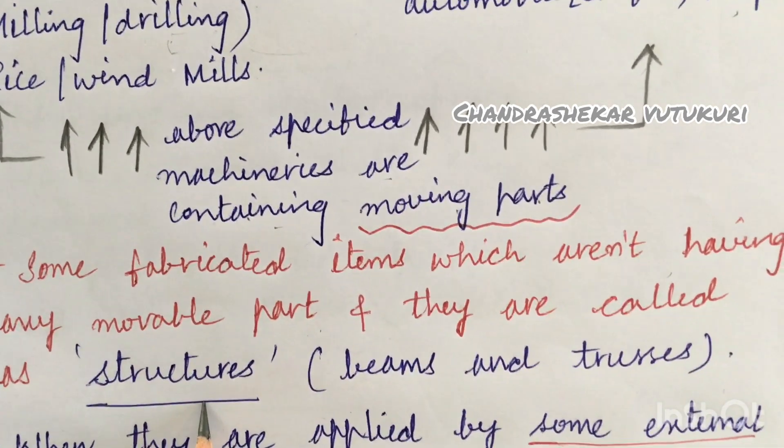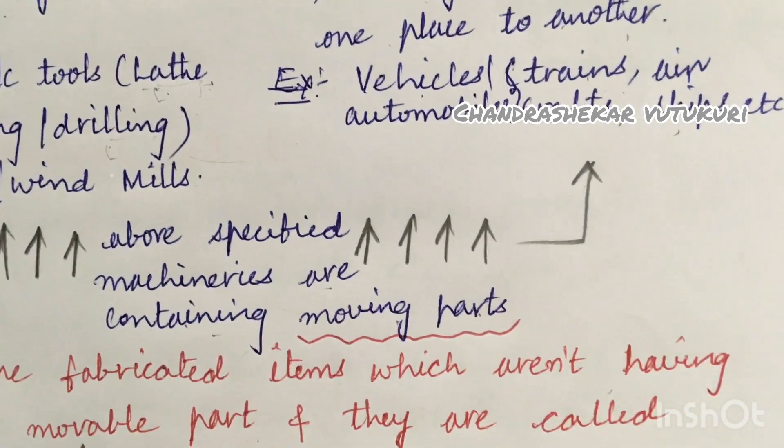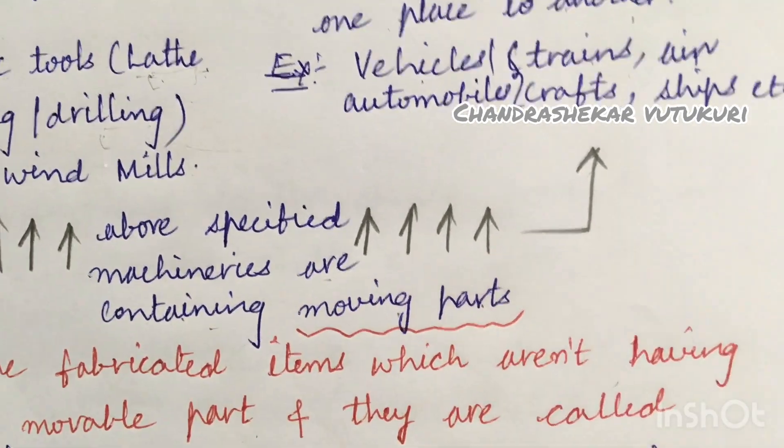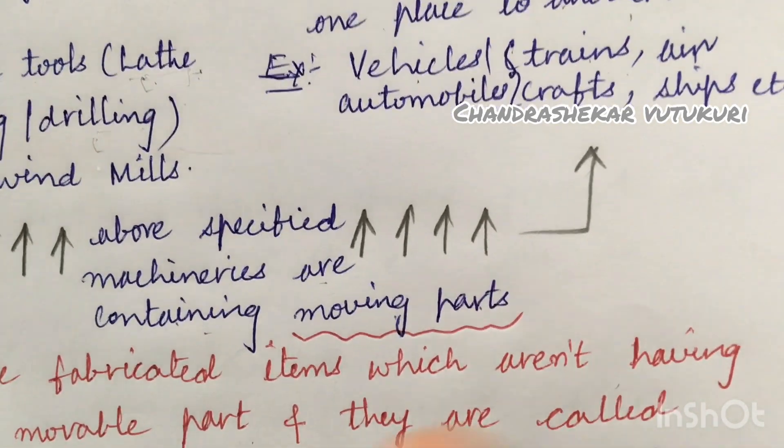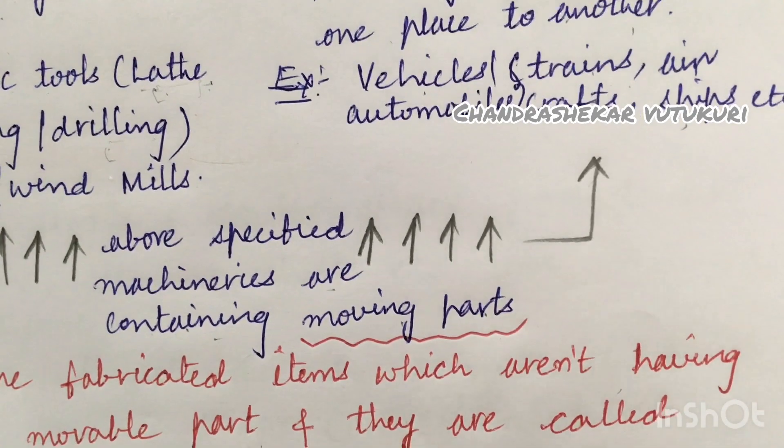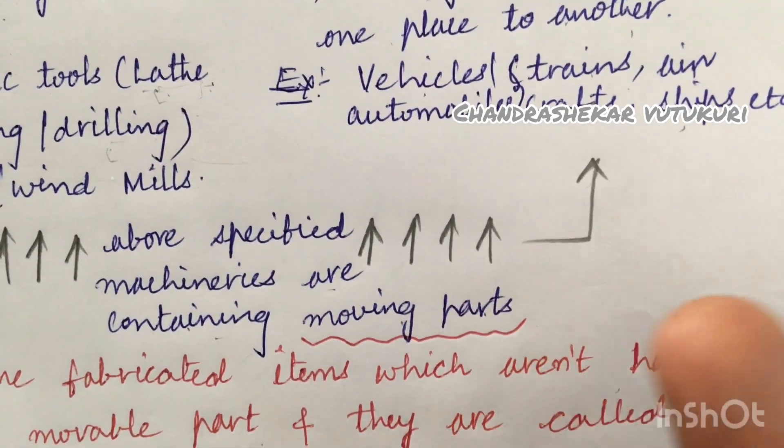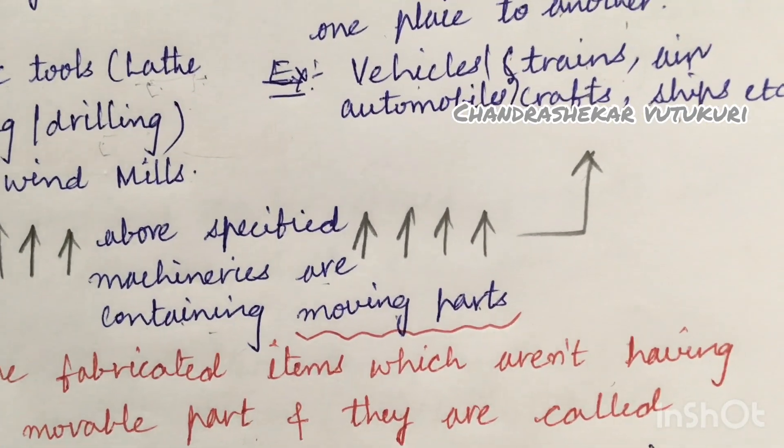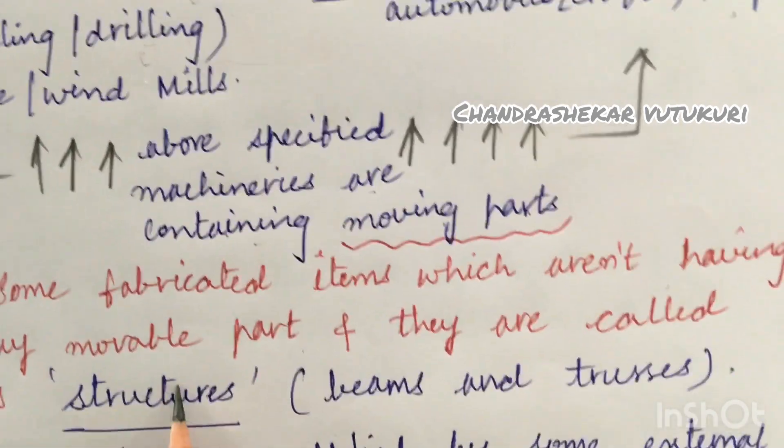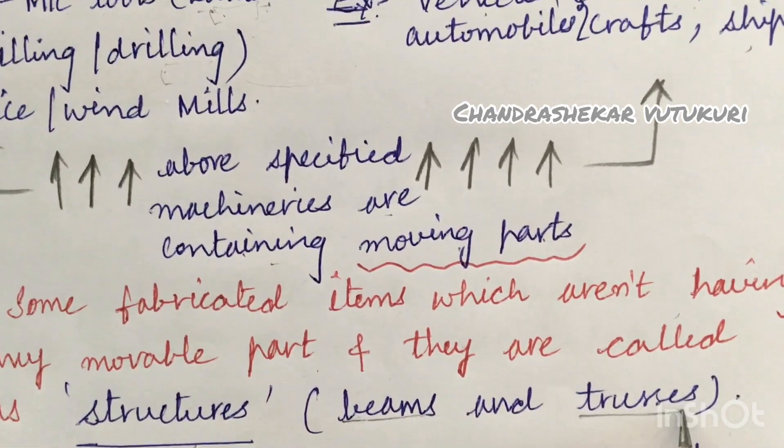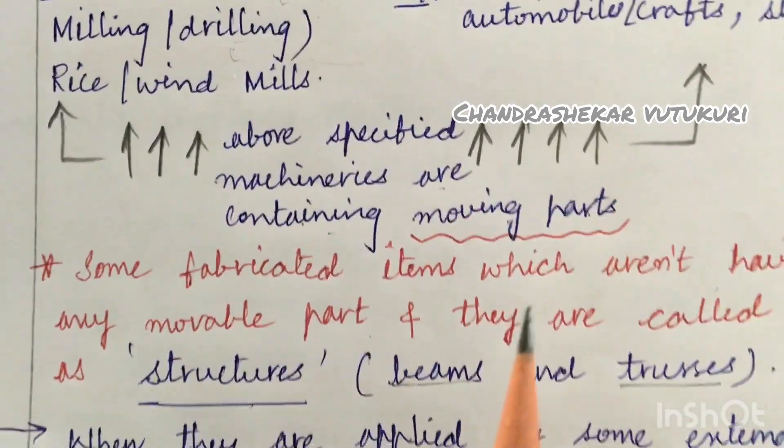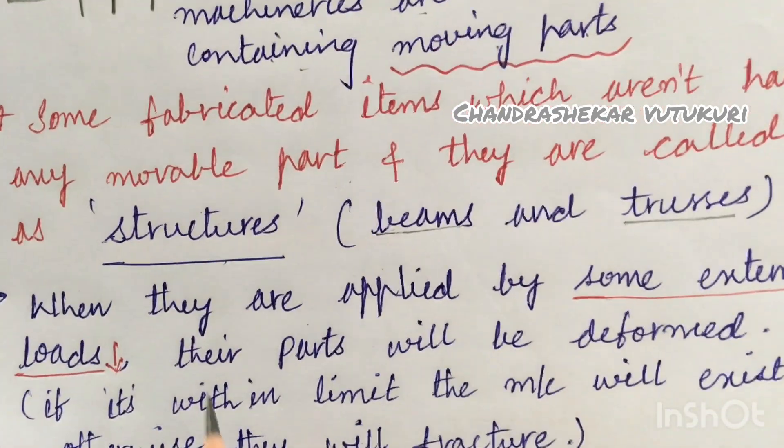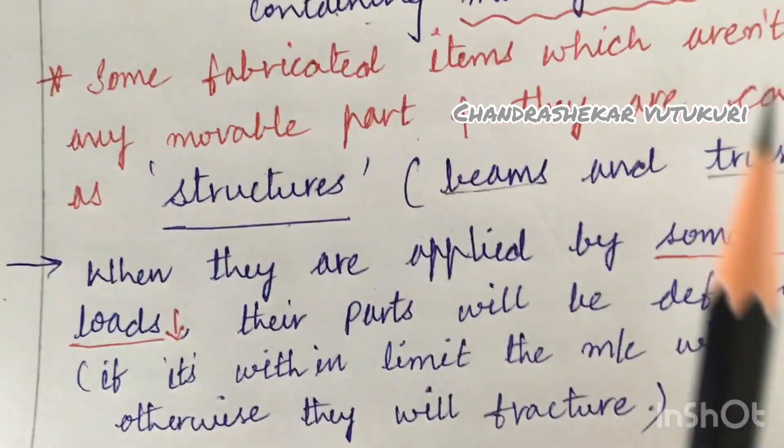Some fabricated items which aren't having any movable parts are called structures. For example, if you take the car body, that is a structure. If you take a car, what are moving? A shaft is moving, the wheel is moving, the gears are moving - they all are movable parts. Other than movable parts, they are the structure, like beams and trusses. They are all structures. I hope you are understanding what I am speaking. Try to understand.